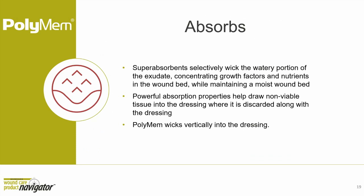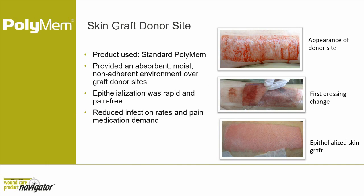PolyMEM absorbs selectively, wicking the watery portion of exudate and concentrating growth factors and nutrients in the wound bed while maintaining moisture. These absorbing properties draw non-viable tissues into the dressing, where they're discarded with the dressing. Clinicians can observe the debris pulled into the dressing upon removal. PolyMEM wicks vertically, reducing the risk of peri-wound maceration. On a donor site case, with only two dressing changes, the site healed beautifully, with rapid epithelialization that was pain-free. Nearly a thousand patients at one facility were managed this way, reducing infection rates and the need for pain medications.